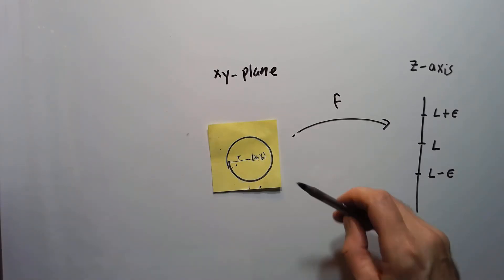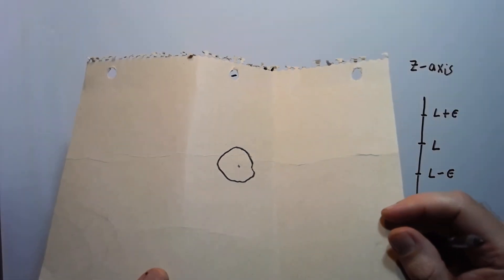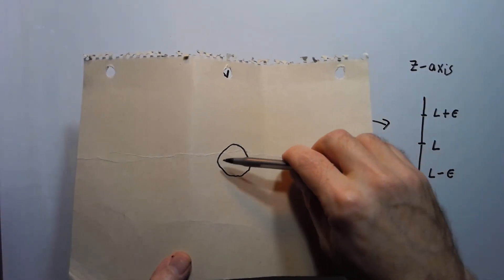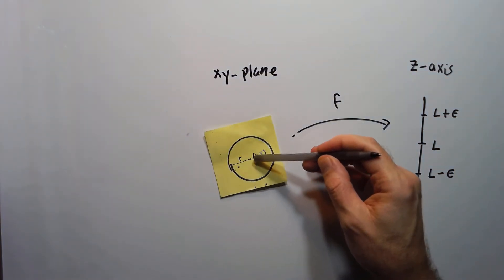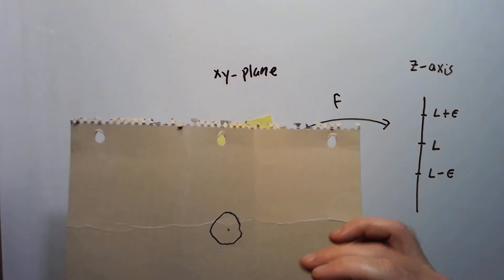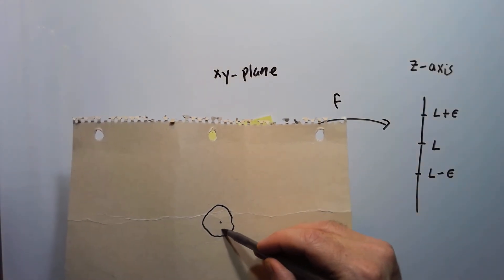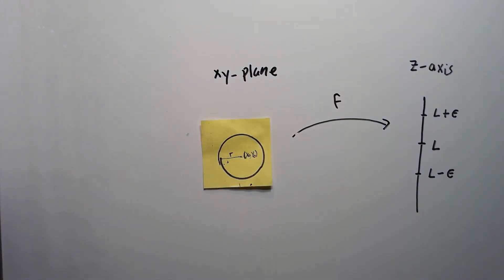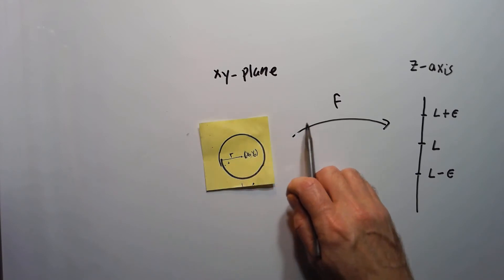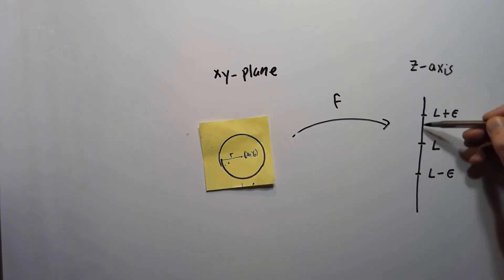And the idea basically is, so for example, this circle, the image of that circle would come up to here, say. If the limit exists, if I took a smaller circle inside there around x0, y0, then we go to a smaller circle around here. So the idea basically is that I should be able to find the radius of this circle such that all the points in here, in the circle, will be mapped into this interval. If I can do that, then I'd say the limit exists. So let me make a few definitions here.